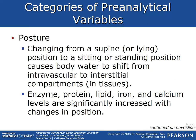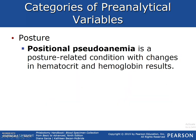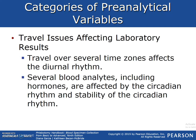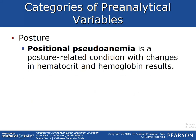Posture: changing from a supine or lying position to a sitting or standing position causes body water to shift from the intravascular to the interstitial compartments and tissues. The enzyme, protein, lipid, iron, and calcium levels are significantly increased with changes in position — please be aware of this. Positional pseudo-anemia is a posture-related condition with changes in hematocrit and hemoglobin results. We need to take into consideration that if a patient was lying down and showed low hemoglobin, but was later drawn while sitting up, they may have this condition.